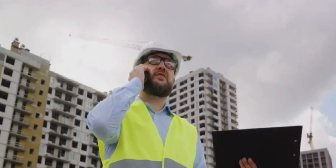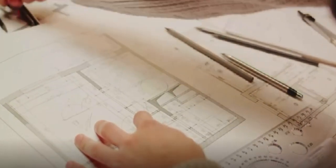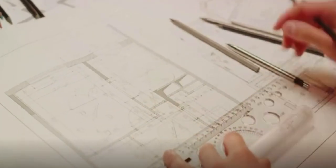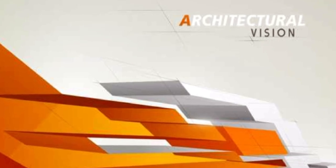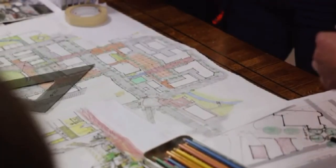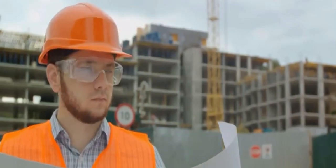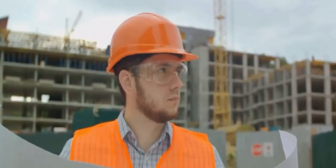To summarize, the architectural design process is a meticulous journey from idea to reality. It begins with a concept, followed by schematic design and design development. Then, the architect creates detailed construction documents before overseeing the construction itself.